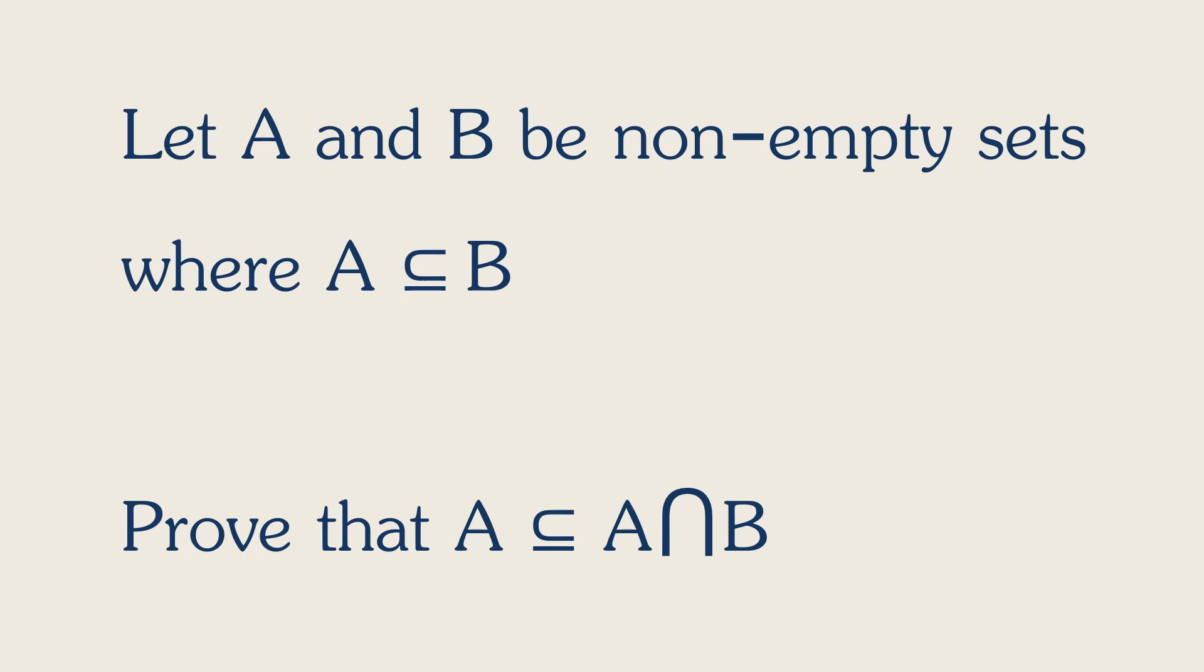Let's look at this question again. Let A and B be non-empty sets where A is a subset of B. Prove that A is a subset of A intersection B. How exactly would you use this in the real world? You've got a group of things, and then a group contained in that group.